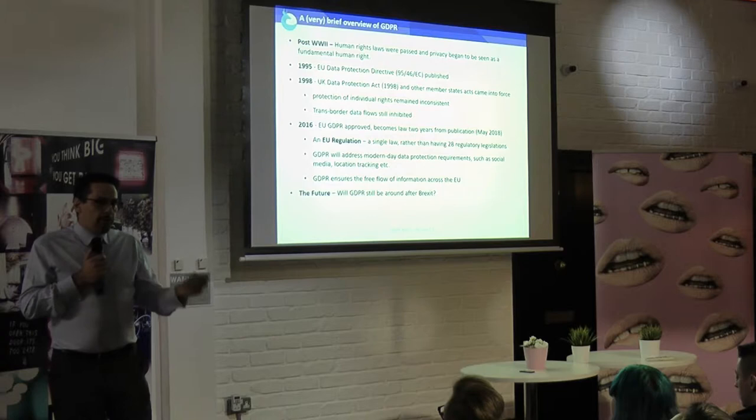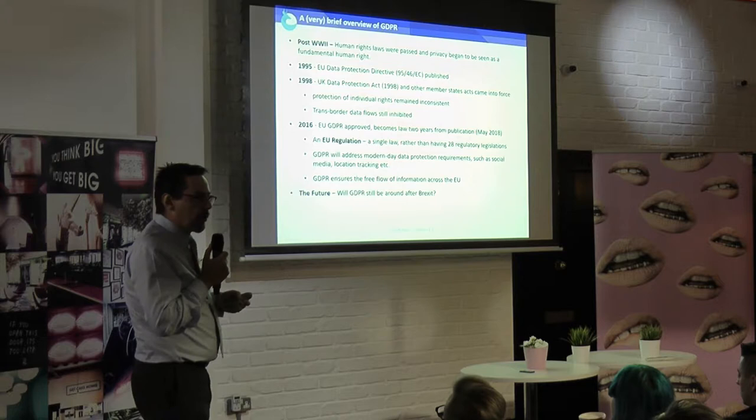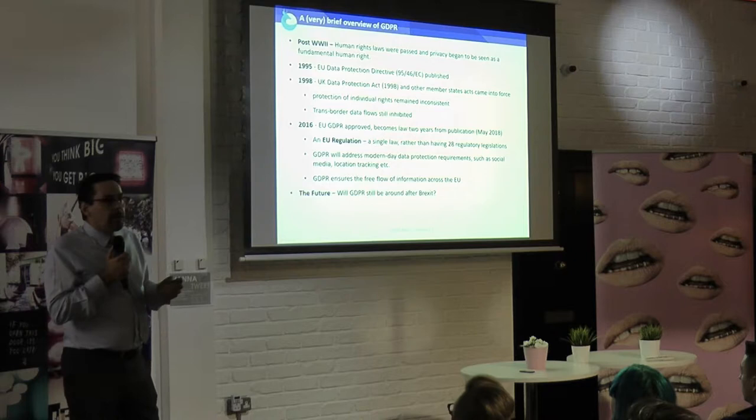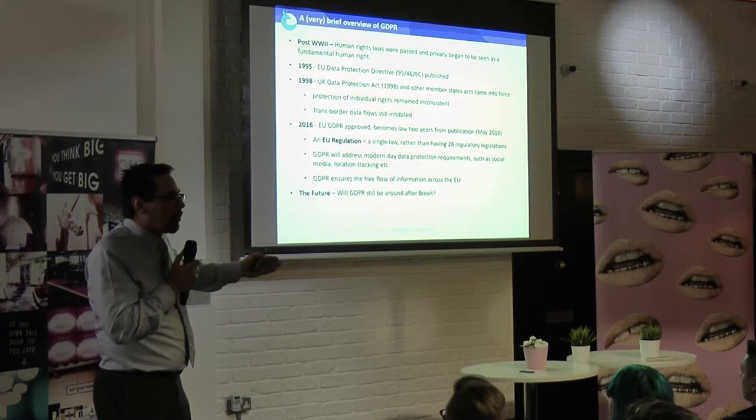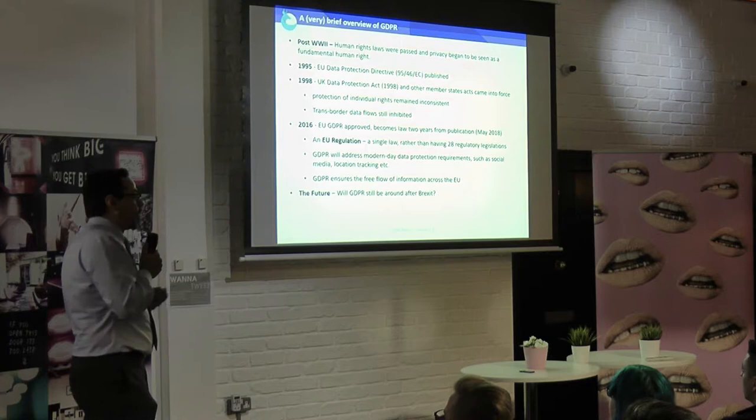Another reason why GDPR came about is because technology has moved on. We all now walk around with a geolocation device in our pockets — we call it a smartphone — but that wasn't around in 1998 really. So things have changed. We're now looking at data protection across Europe, trying to make sure that we can transmit data across borders and improve the environment in Europe.